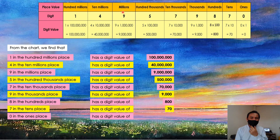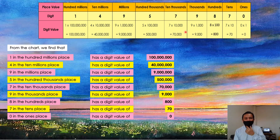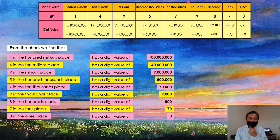9 in the millions place has a digit value of 9 million. 5 in the hundred thousands place has a digit value of 500,000. 7 in the ten thousands place, and 9 in the thousands place has a digit value of 9,000.